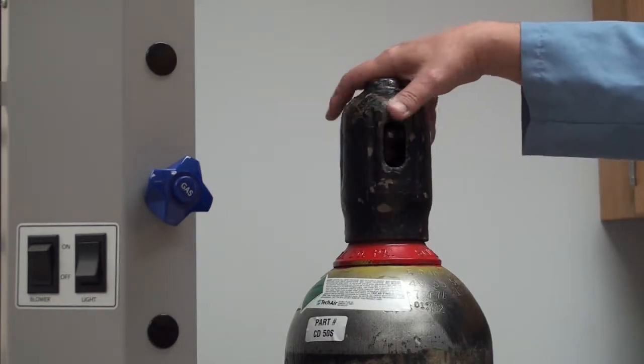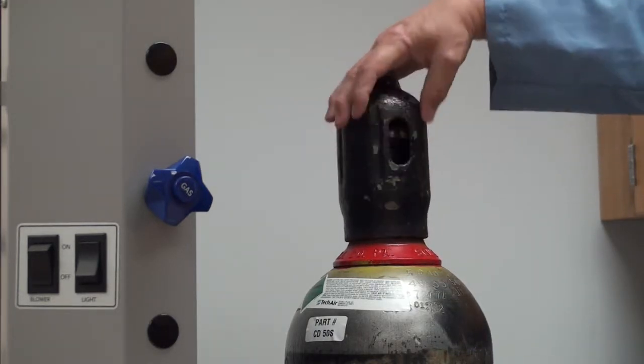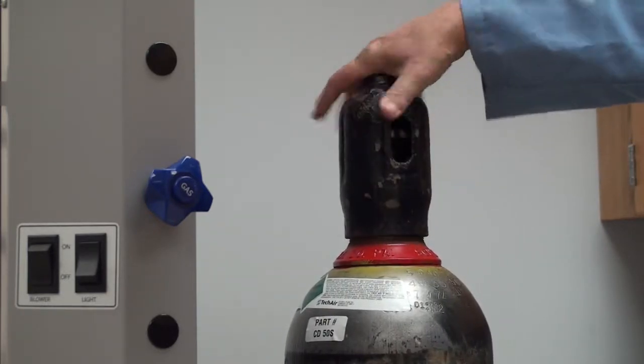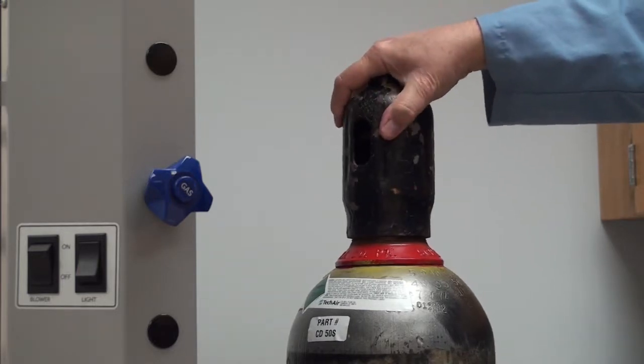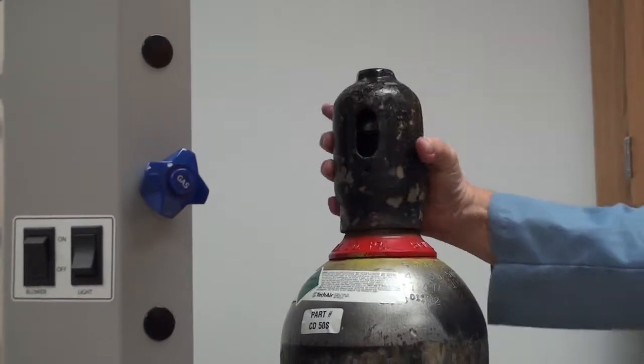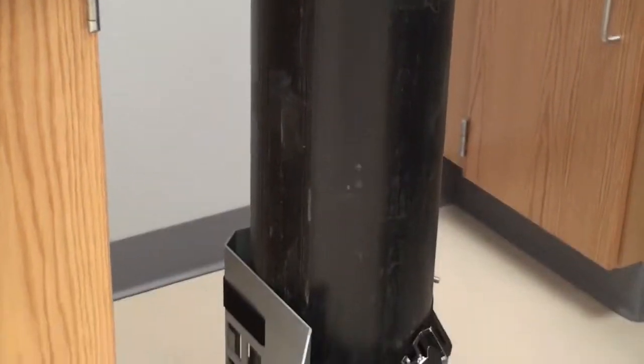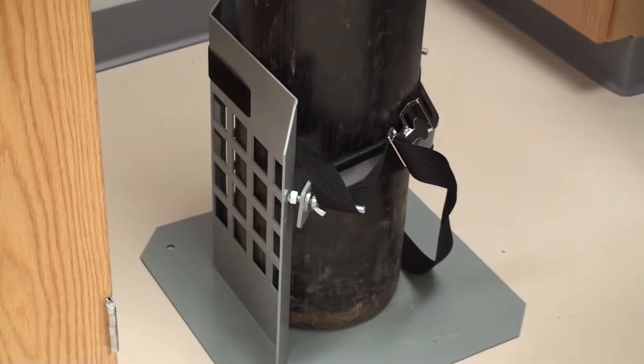So you need a liquid CO2 with a dip tube. Once you have the tank, remove the safety cap. Always make sure that you either have the tank tied down to something, an appropriate system that is safety approved. In this case, for our lab, we have a proper stand for it.